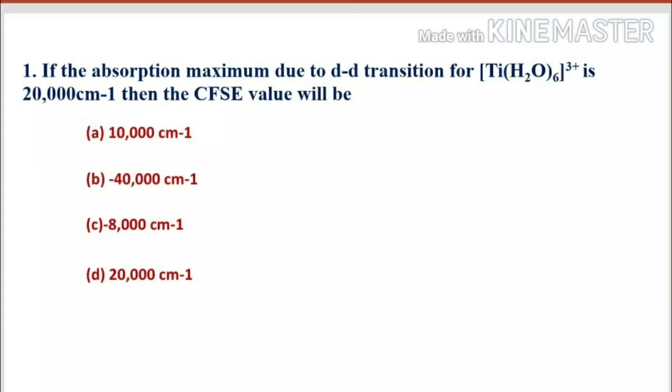If the absorption maximum due to d-d transition for hexaqua titanium(III) ion is 20,000 per centimeter, then the CFSE value will be: option A 10,000 per centimeter, option B minus 40,000 per centimeter, option C minus 8,000 per centimeter, option D 20,000 per centimeter.